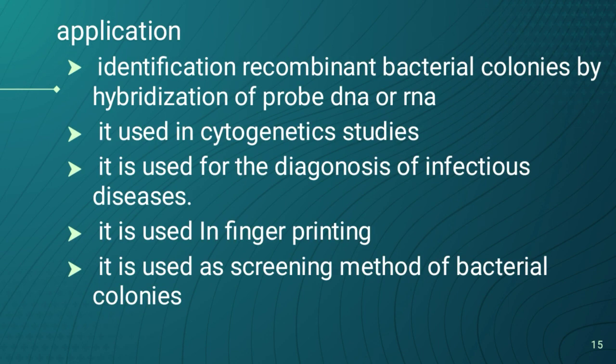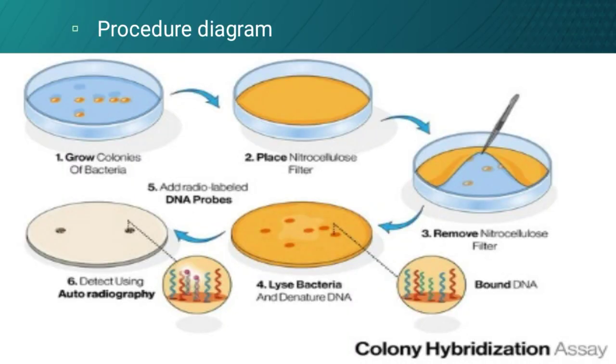Applications: Colony hybridization is used for the identification of recombinant bacterial colonies by hybridization of probe DNA or RNA. It is used in cytogenetic studies, for diagnosis of infectious diseases, in DNA fingerprinting, and as a screening method for bacterial colonies.